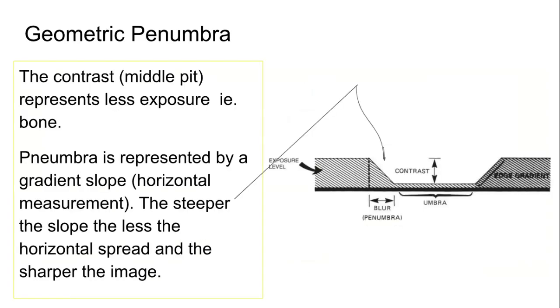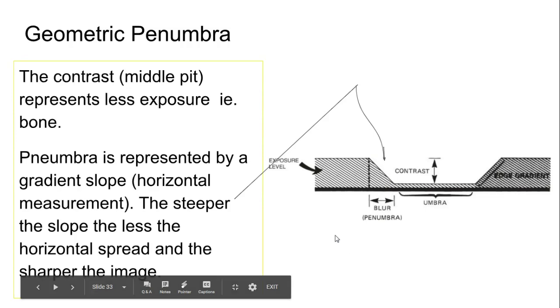So here we see it again, right? Contrast is kind of in the middle here and penumbra is represented by this horizontal slope area, but we're looking at the steepness really of this line over here. The steeper it is, the less penumbra you have, right? So the steeper it is, if it were straight, if this line just went straight up, and I believe you'll see that on the next slide, there would be virtually no penumbra, no blur, the best spatial resolution you can get.